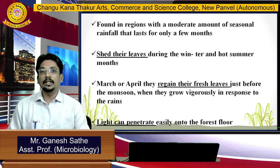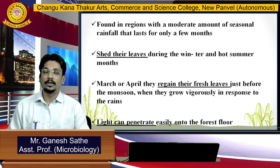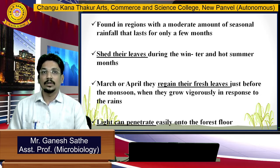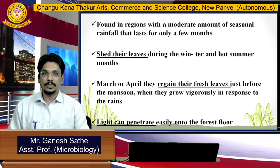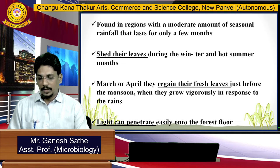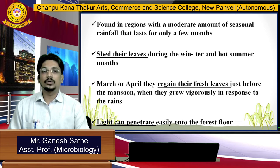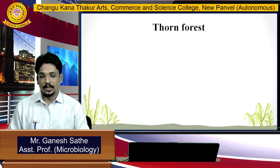This is deciduous forest. Deciduous forests are found in regions with a moderate amount of seasonal rainfall that lasts only for a few months. They shed their leaves during winter and hot summer. In the months of March and April, they regain their fresh leaves just before the monsoon, when they grow vigorously in response to the rains. Light can penetrate easily into this type of forest.